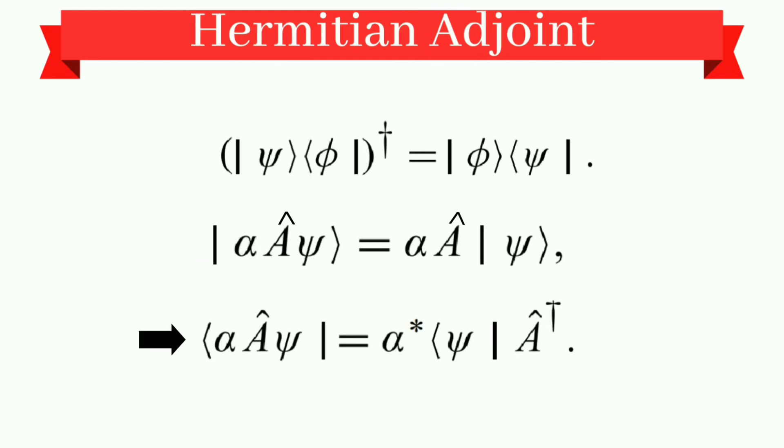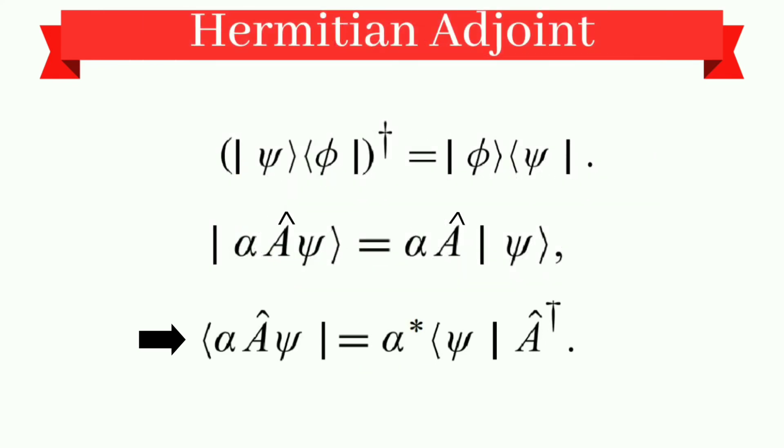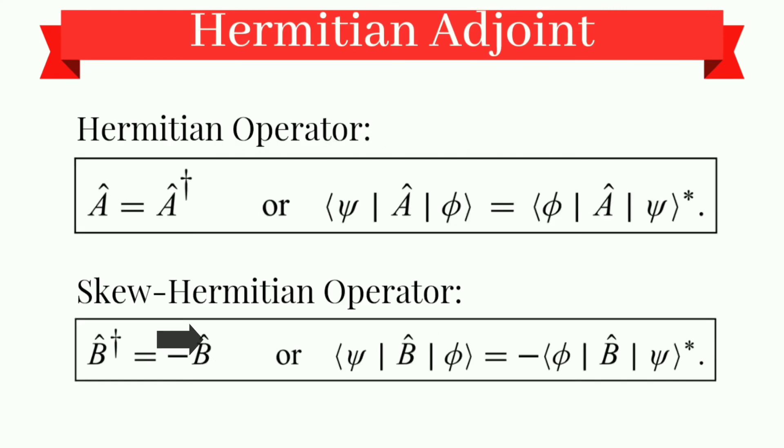But now in the case of bra, let's see. Bra vector lowercase a times A operator psi gives us a star times bra psi times A dagger. Why is it so? This is because adjoint will operate with bra only. Right? Adjoints are always applied on the bra. Applying the second property here, we are getting a star, A dagger, and in between the bra psi.